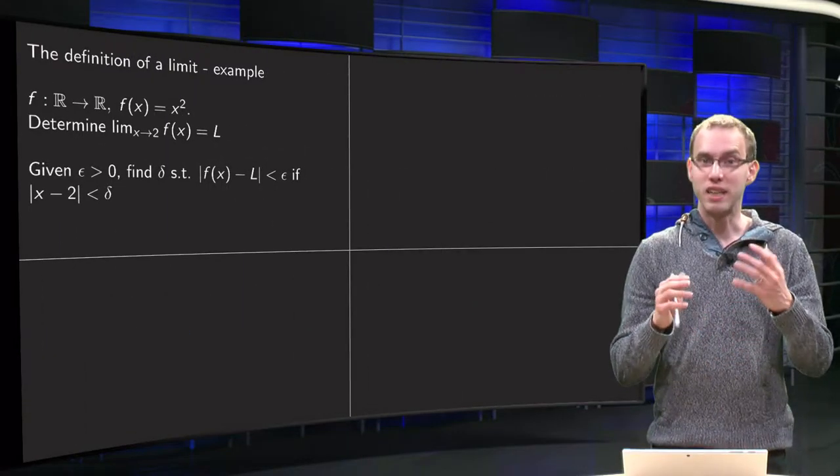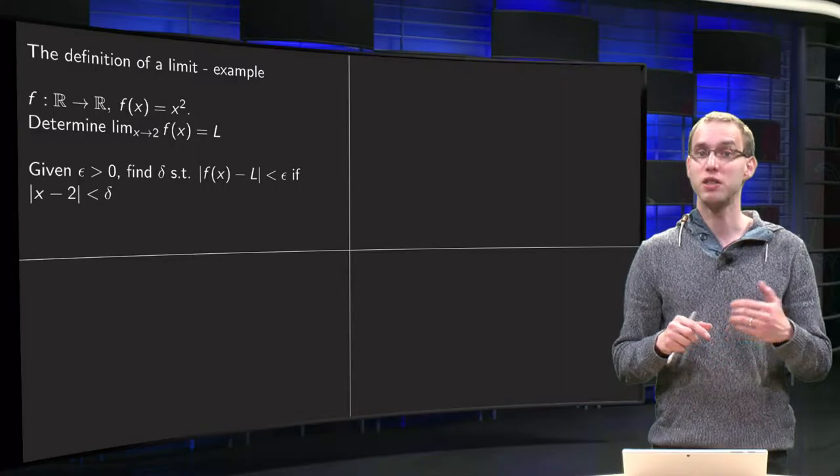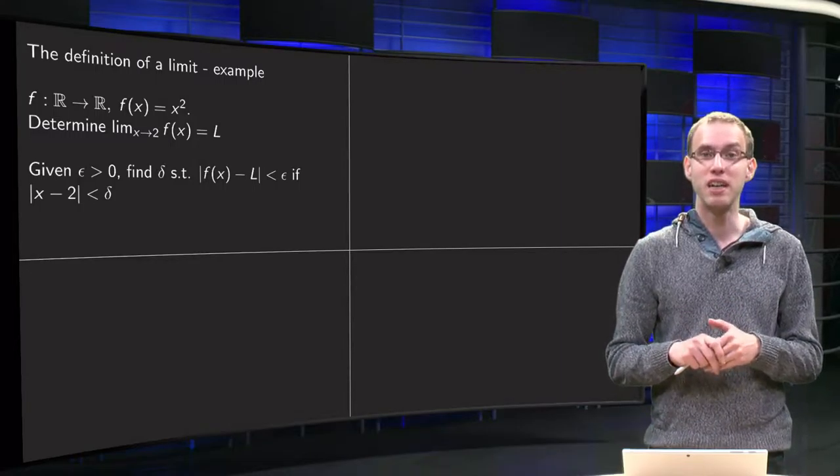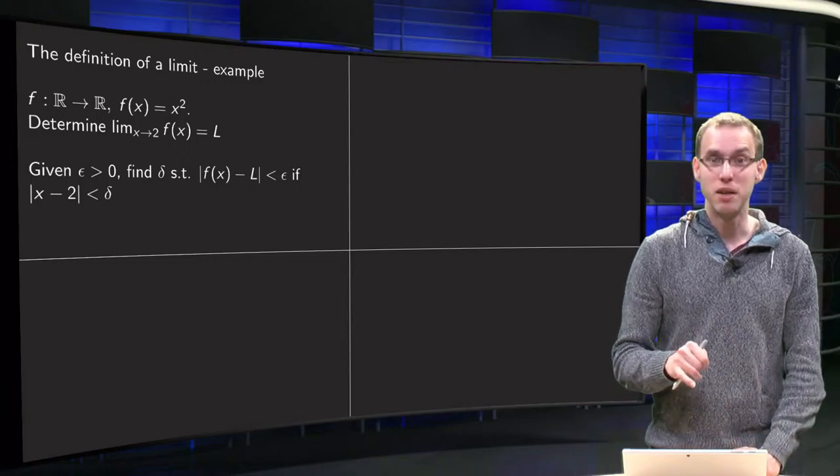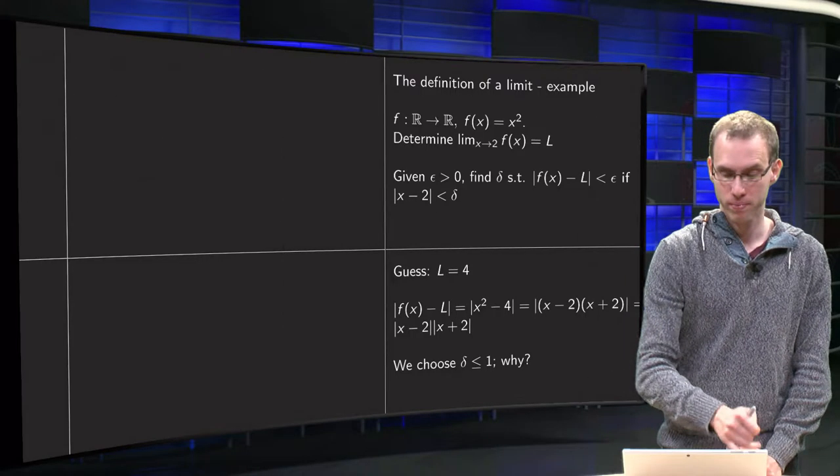Well, first of all we have to guess what the limit will be if x approaches 2, and do that graphically. For example, I guess that this limit will probably be 4, 2 squared is 4. So we guess L equals 4.